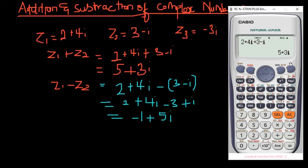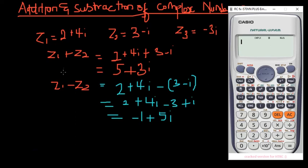Now let's do subtraction on the calculator. You enter two plus four i, minus open bracket three minus i, close bracket, and then you get your answer just like that. You can also move on and do other calculations.